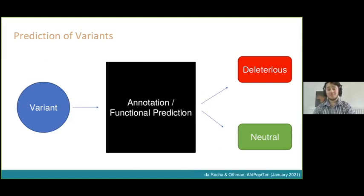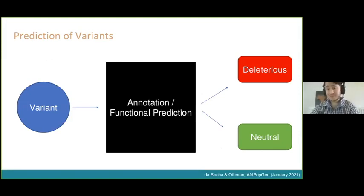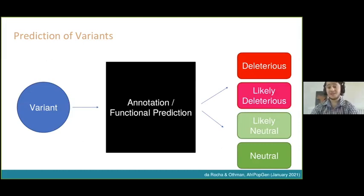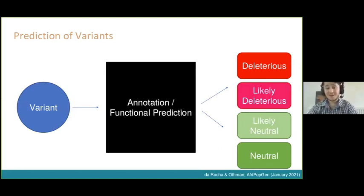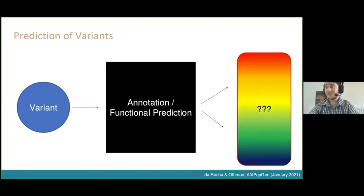Traditionally, you would use these tools in a fashion where you have a variant, you don't know much about it, you give it to your annotation or prediction tool, and it gives you an outcome in a binary sense — nasty or good, deleterious or neutral. But these tools have expanded to extend that range, since there isn't always a clear-cut line. Current tools today tend to provide a range of scores, which is more complicated to interpret.